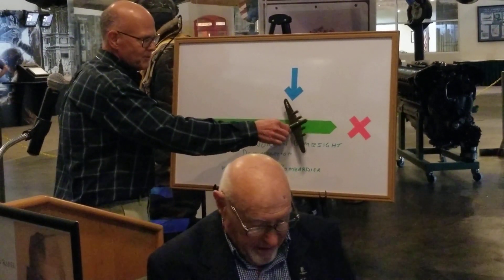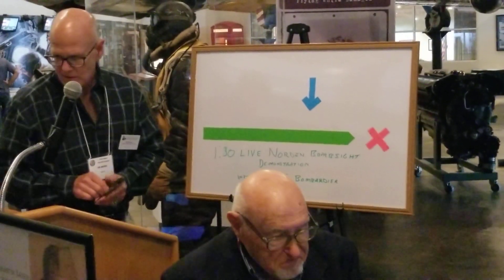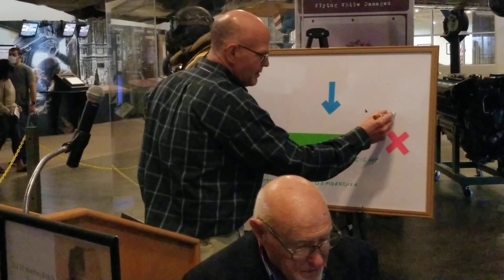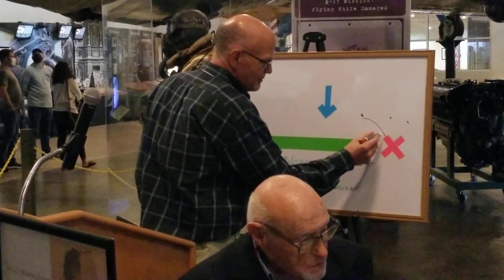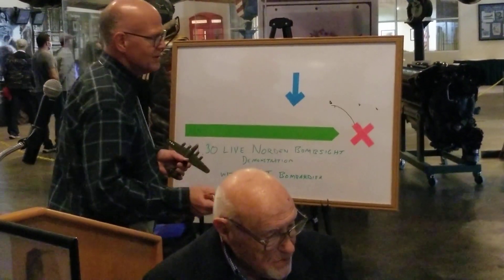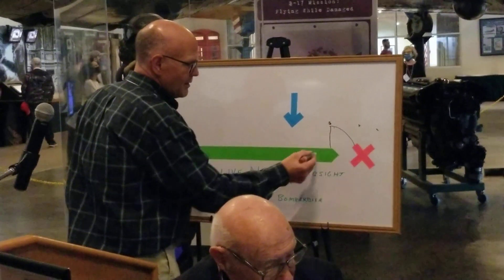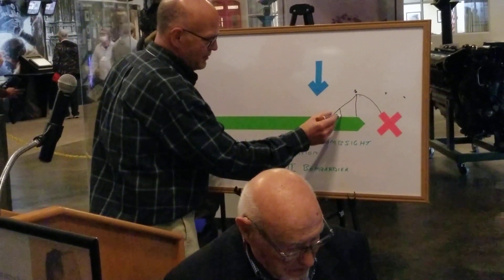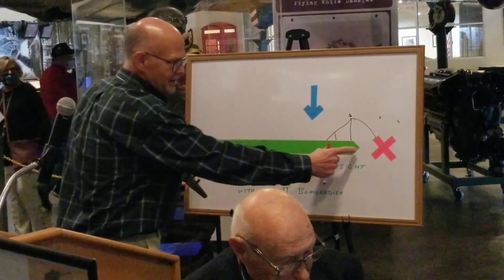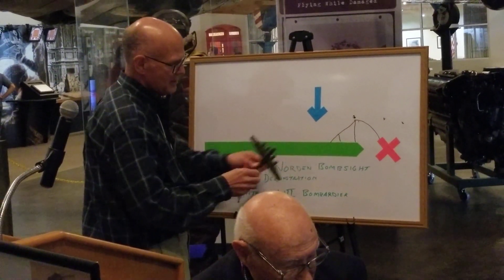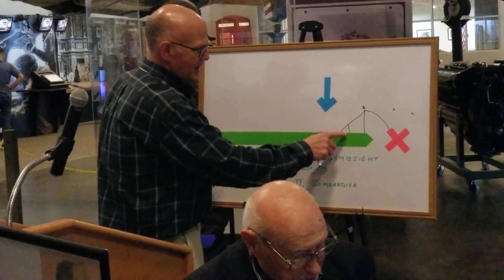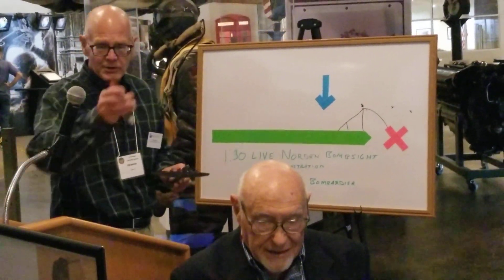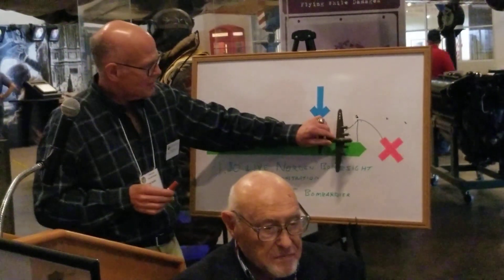To get upwind from the target, you have to move a distance called the cross trail — the distance upwind that you have to move so that when you release the bomb, it gets blown downwind. The bombsight is able to compute the cross trail because the cross trail is equal to the trail, which we talked about before, times the sine of the drift angle. So you set your trail in, you've got your drift angle set in, and trail times the sine of the drift angle calculates the cross trail. It actually tilts the telescope to one side, and that causes the bombardier to put the airplane upwind.